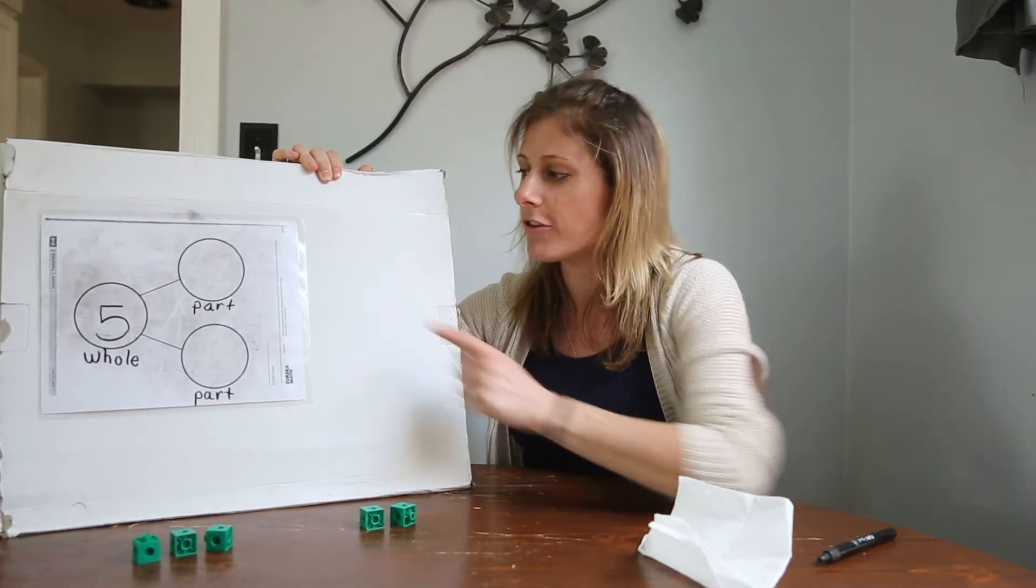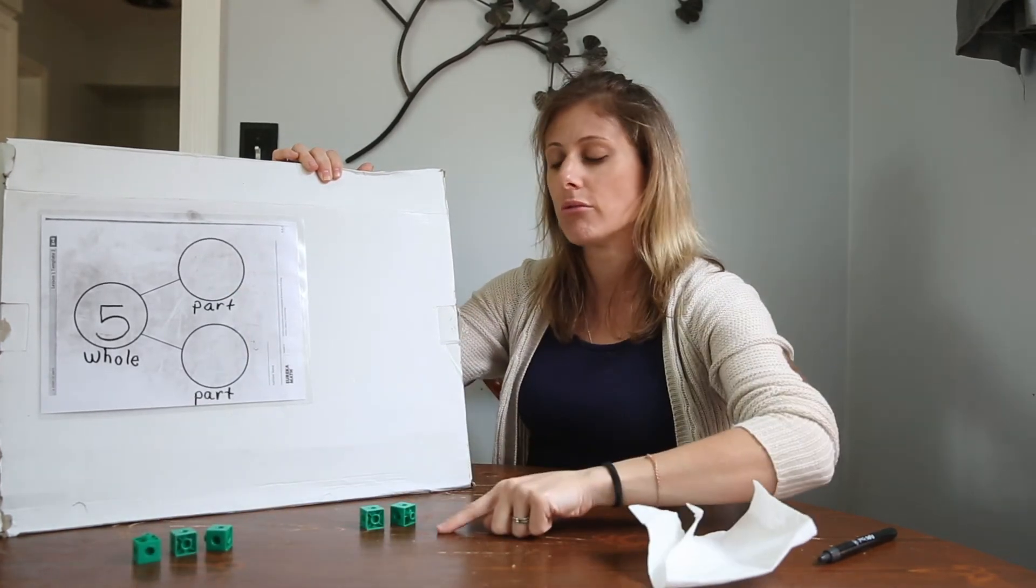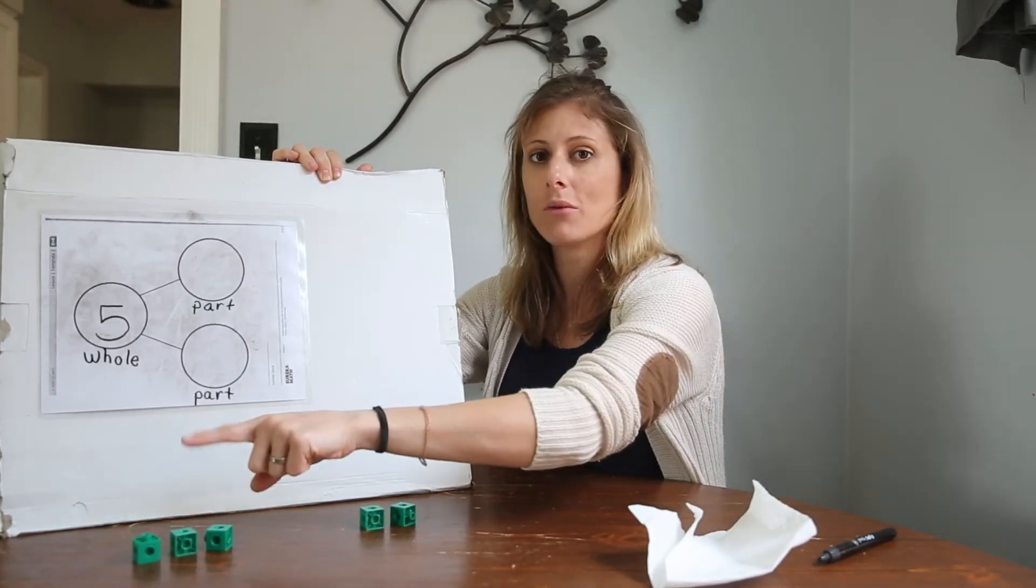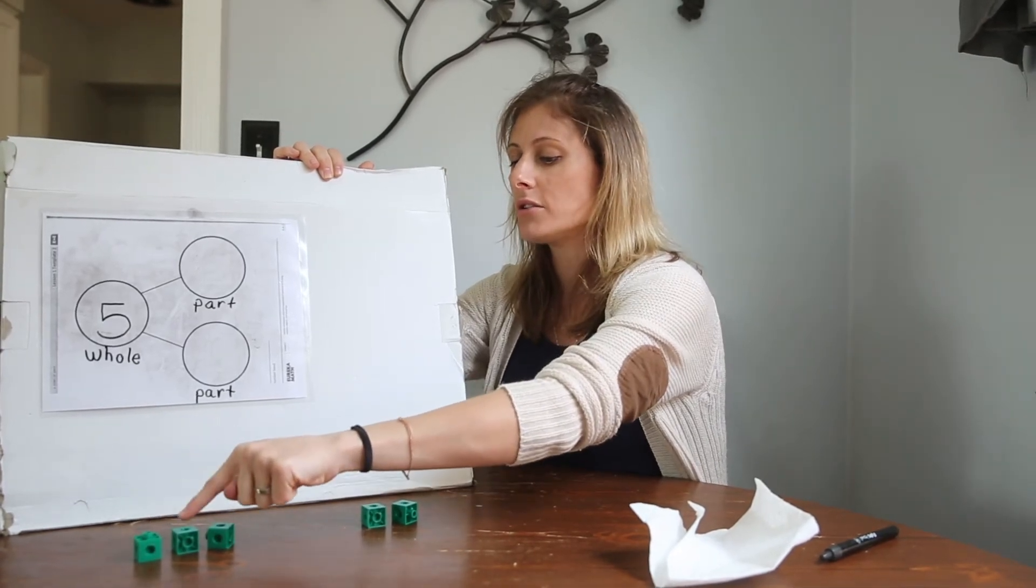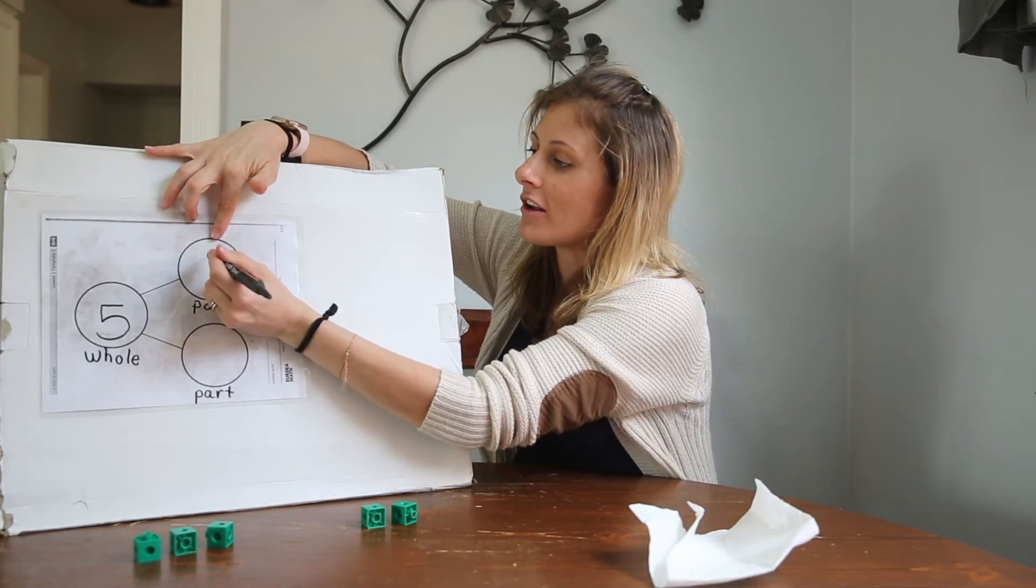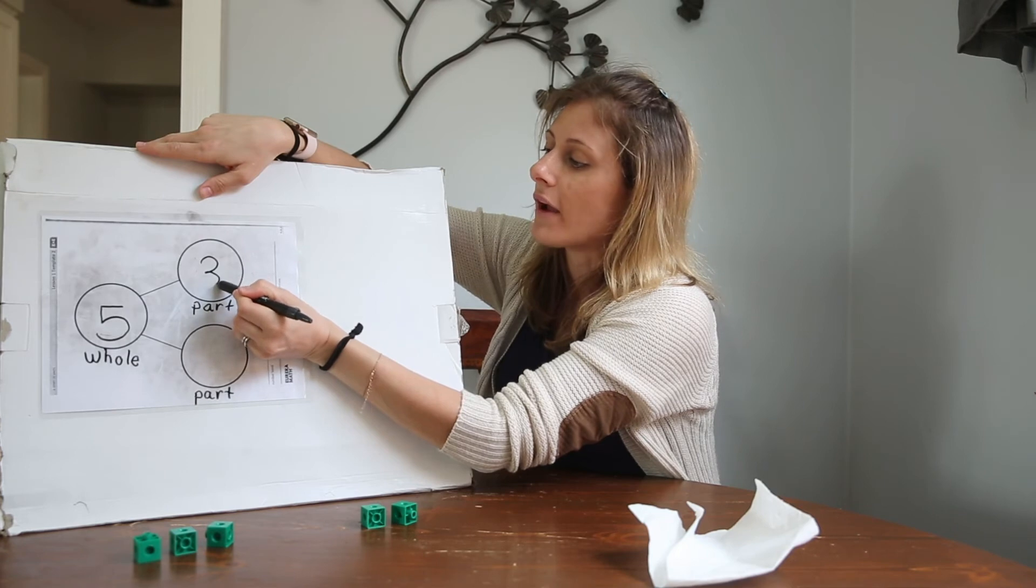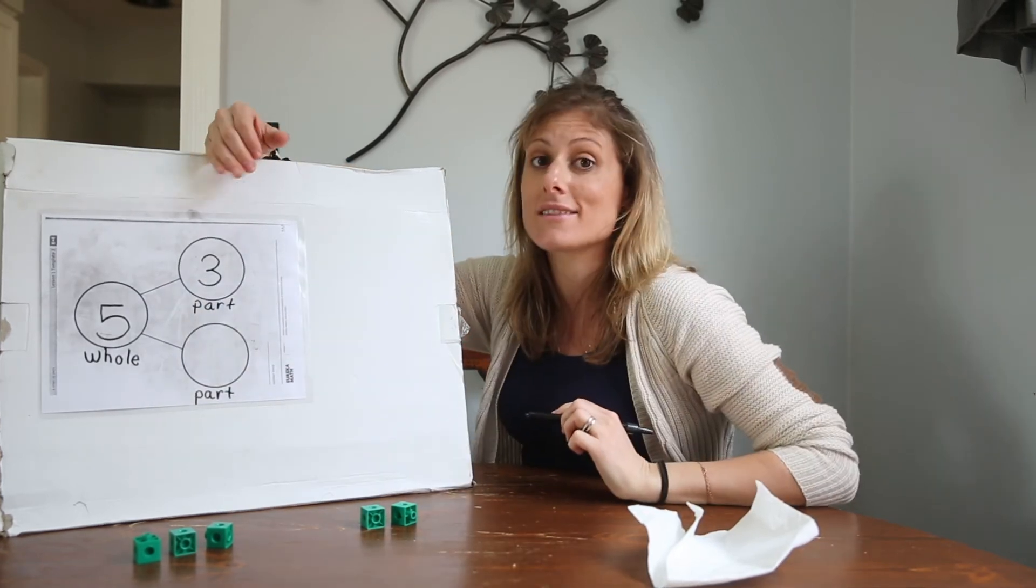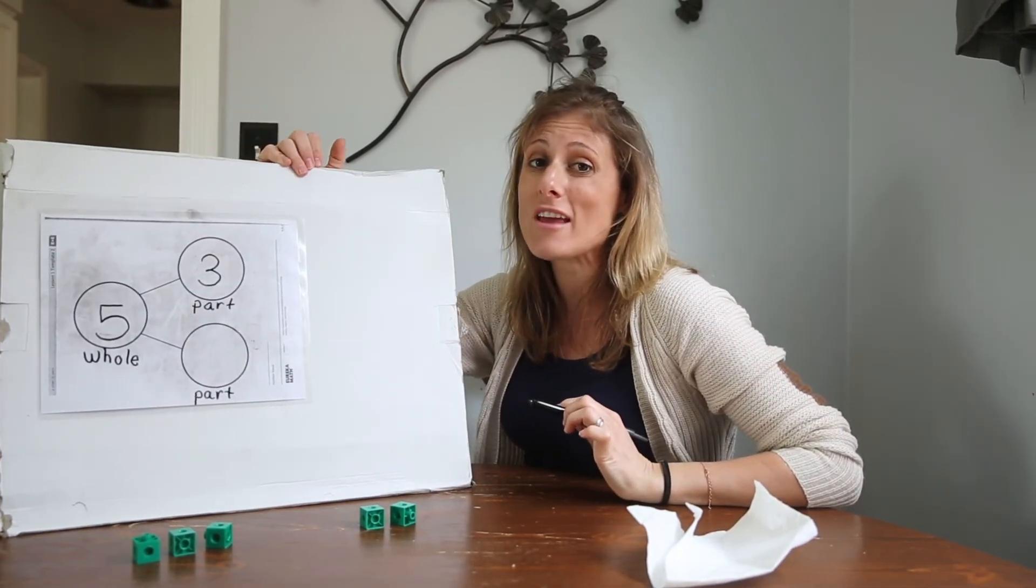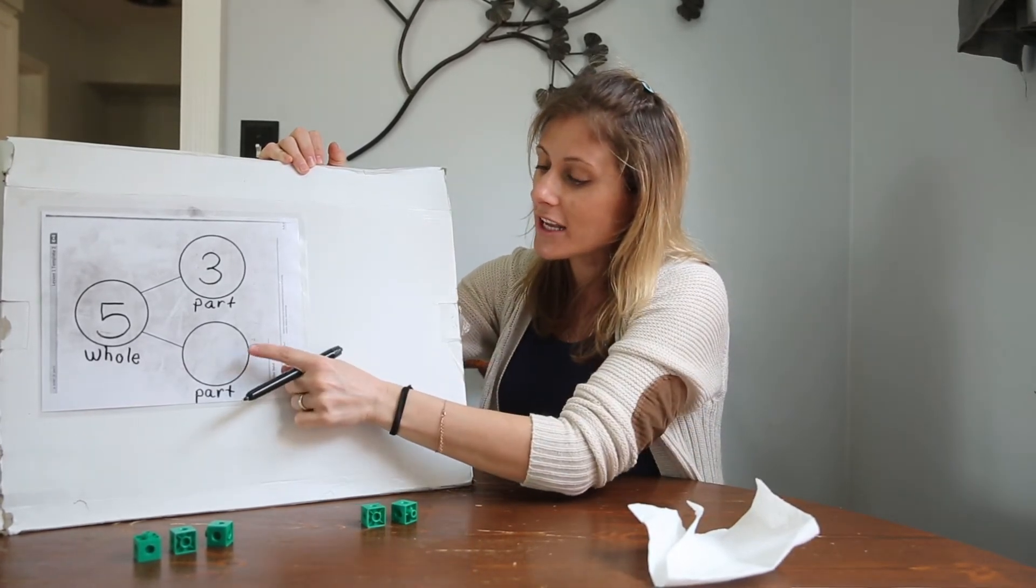Let's see. I need to count my first part. So I'm gonna start from left to right. First part, count with me. One, two, three. I have three in one part. So I'm gonna write the number three. Around a tree and around a tree. That's the way to make a three. And now it's time to find my second part.